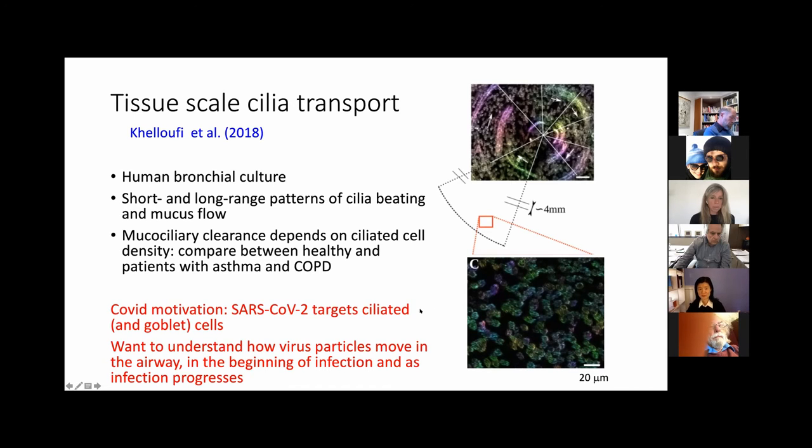When we saw this paper during the COVID period, we had this observation of SARS-CoV-2 targeting ciliated cells. Some even suggest they target goblet cells. So we really want to understand how virus particles move in the airway. In the beginning of the infection, as the infection progresses, they kill the ciliated cell. The cell density change, the cilia density change, how that changes the particle movement. And if you also target the goblet cells, if you change the mucus, increasing the mucus, decreasing the mucus, how that change the propagation of the particles.